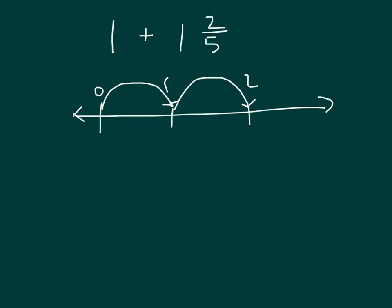We'll make 2 smaller units there, indicating fifths, and we will travel those 2 fifths to get 2 and 2 fifths.